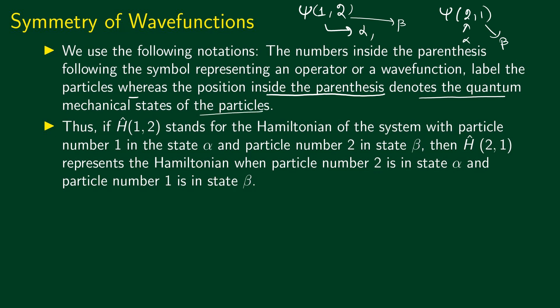For example, if we are talking about the Hamiltonian, H(1,2) stands for the Hamiltonian of the system with particle 1 in state α and particle 2 in state β. And H(2,1) represents the Hamiltonian when particle 2 is in state α and particle 1 in state β. This is the notation that we are going to use from here onwards.